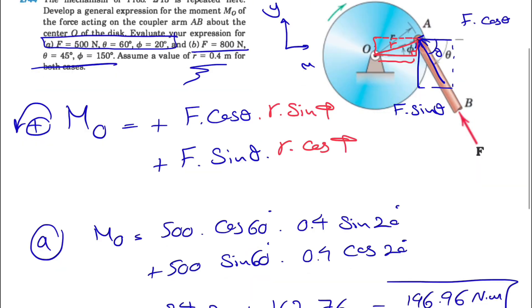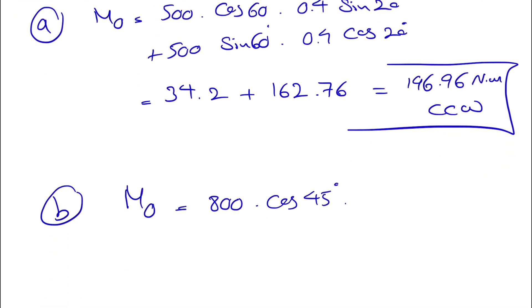So if you look at here we see that the F is 800, theta is 45, and phi is 150, with the same value for r, cosine of 45, same value for r, sine of theta which is 150 degrees, and we're going to do the same thing for the other one.